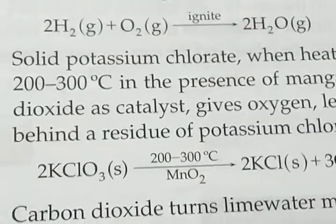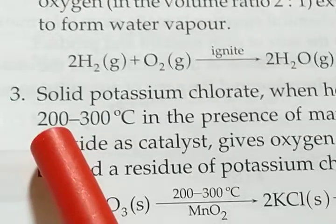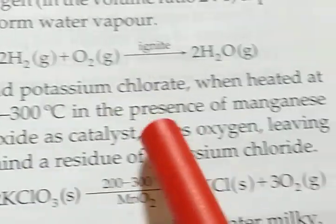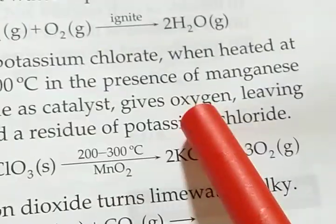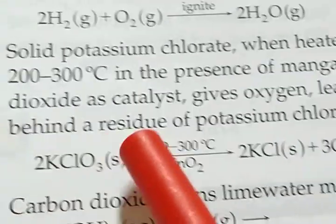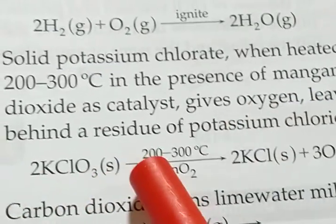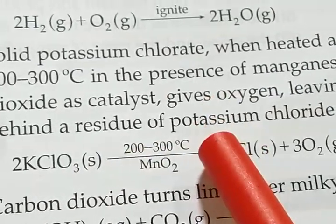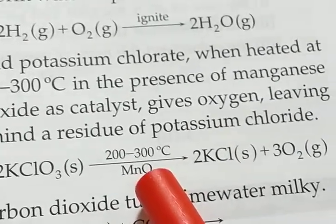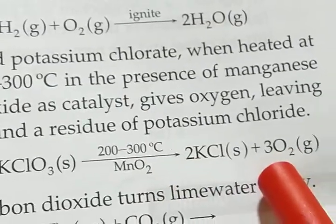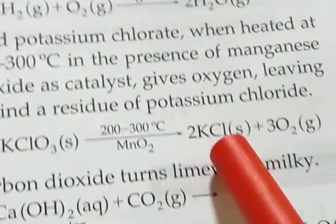Next, solid potassium chlorate when heated at 200 to 300 degree Celsius in the presence of manganese dioxide as a catalyst gives oxygen, leaving behind a residue of potassium chloride. So normally, if we heat potassium chlorate to 200-300 degree Celsius and use MnO2, I mean manganese dioxide as a catalyst, then normally oxygen will form and along with that potassium chloride remains as residue or waste product.